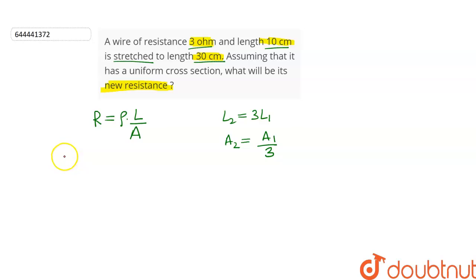The initial equation for the resistance of wire will be R1 equals rho L1 upon A1, and the final equation will be R2 equals rho L2 upon A2. Now let us put the values of L2 and A2 in this equation.